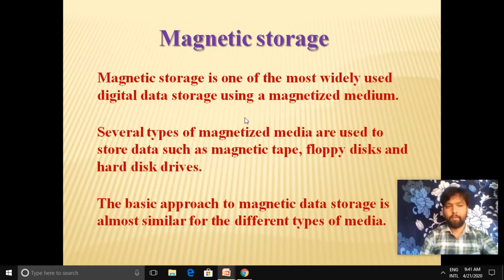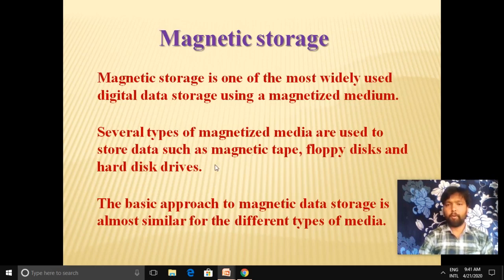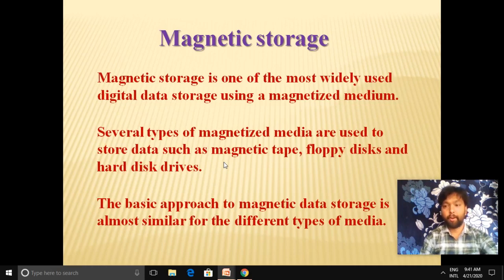Hard disk drives are used to store data in computers and are placed permanently inside them. Magnetic tape is used largely in film recording or audio recording due to its large storage capacity. Floppy disks were used earlier to store minimal data and to move media between computers and digital devices such as cameras.